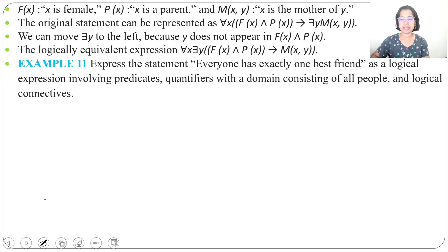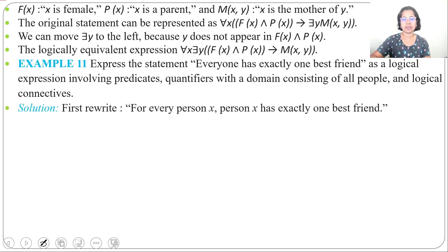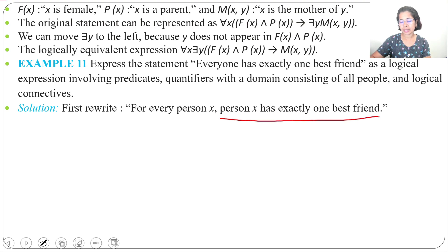Example 11. Express the statement 'Everyone has exactly one best friend' as a logical expression involving predicates, quantifiers with domain consisting of all people, and logical connectives. First, we rewrite it as: for every person X, person X has exactly one best friend. We consider another person Y who is X's best friend, and if there is some Z not equal to Y, then Z is not the best friend of X.